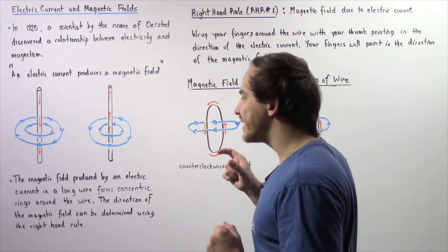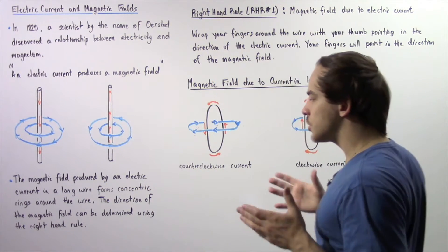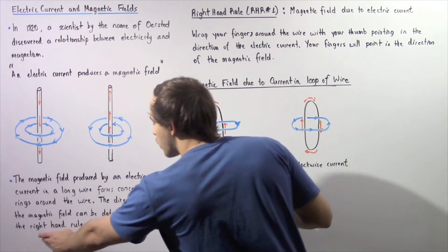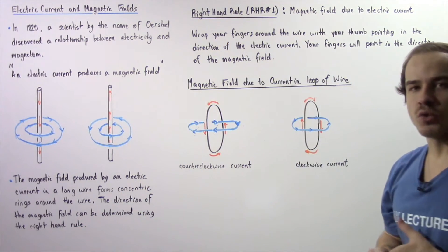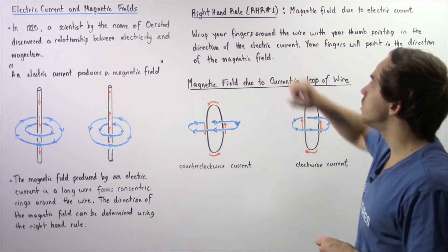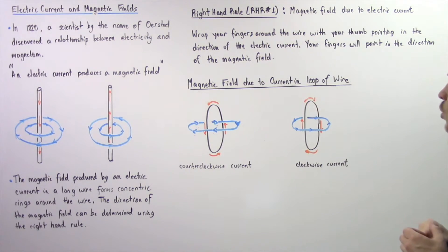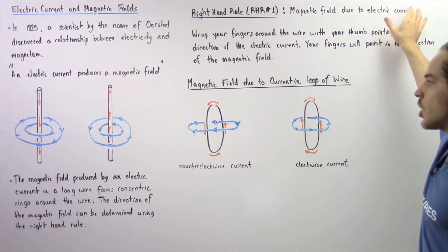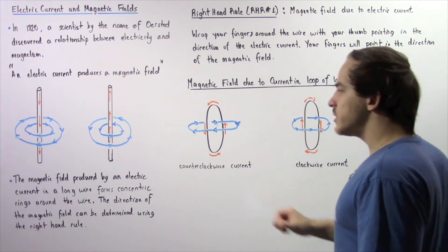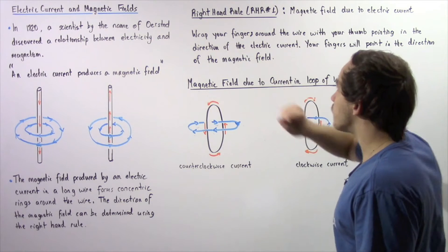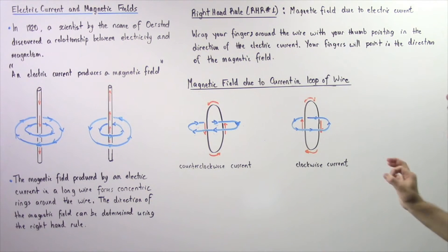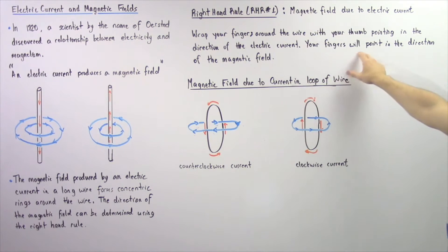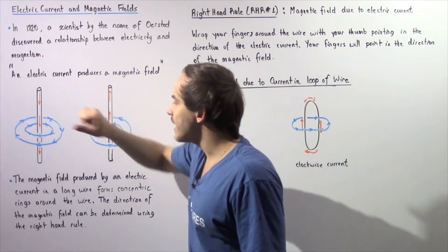The direction of the magnetic field produced by our electric current can be determined using the right-hand rule. Let's examine this right-hand rule, which is also known as right-hand rule number one. This is the right-hand rule that applies to magnetic fields as a result of electric currents within wires. We essentially take our right hand and wrap our fingers around the wire with our thumb pointing in the direction of the electric current. Our fingers will then point in the direction of the magnetic field. Let's apply this rule to wire number one.